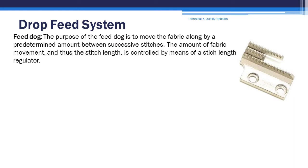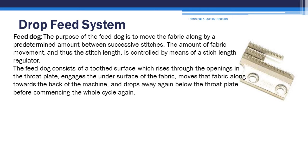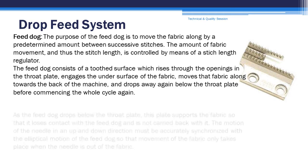Feed dog. The purpose of the feed dog is to move the fabric along by a predetermined amount between successive stitches. The amount of fabric movement, and thus the stitch length, is controlled by means of a stitch length regulator. The feed dog consists of a toothed surface which rises through the openings in the throat plate, engages the undersurface of the fabric, moves that fabric along towards the back of the machine, and drops away again below the throat plate before commencing the whole cycle again.